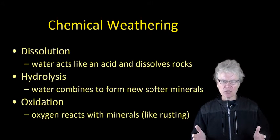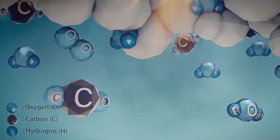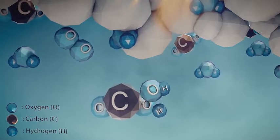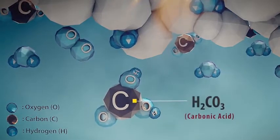The other type of weathering is chemical weathering, and the main types are dissolution, hydrolysis, and oxidation. The first is dissolution - as the name suggests, this is where minerals are completely dissolved. Water itself can do the dissolving; it dissociates weakly and acts like a weak acid. But it's more common when rainfall combines with carbon dioxide in the atmosphere to produce a weak carbonic acid, which can then dissolve the minerals.